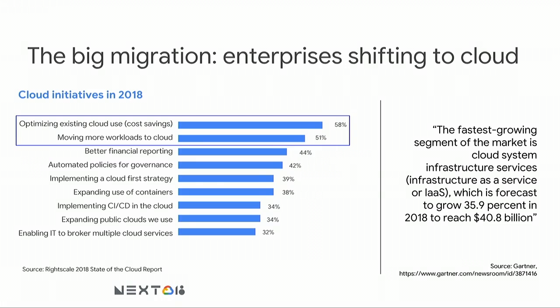Diving into cloud initiatives, the two topmost priorities are: move more workloads faster, and optimize the cost of workloads already in the cloud. Two years ago there was a lot of focus on first modernizing workloads before moving. But CIOs are realizing those modernization projects take very long time and consume a lot of resources, while cloud migration projects get delayed — meaning more investment in aging infrastructure you want to decommission.